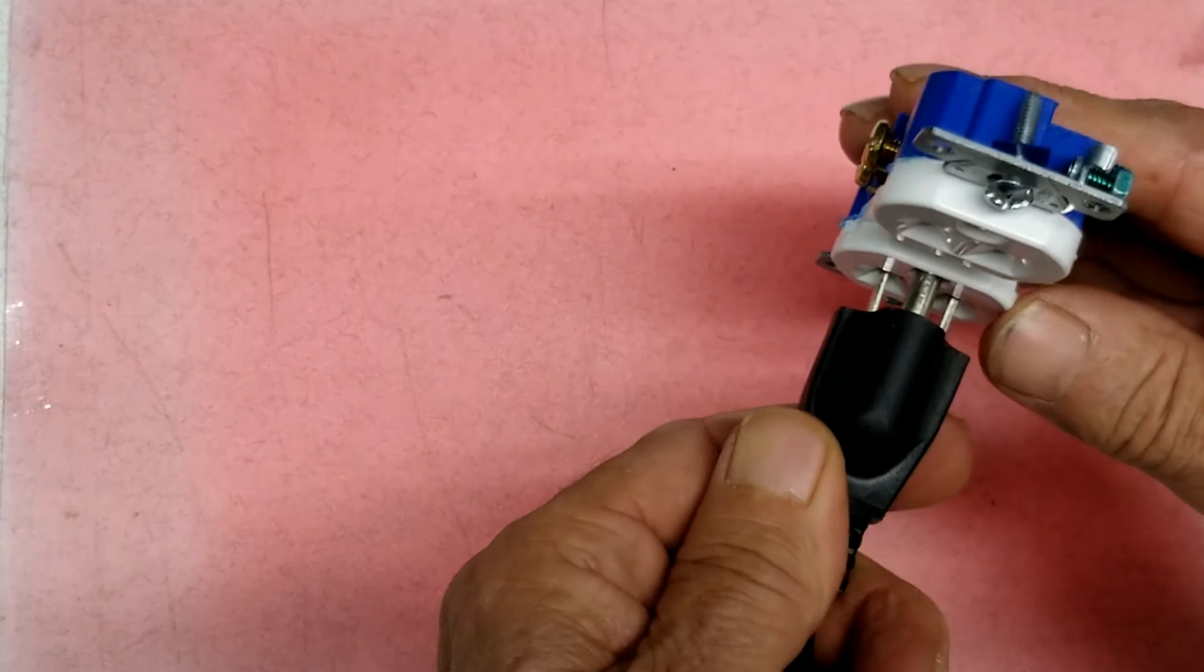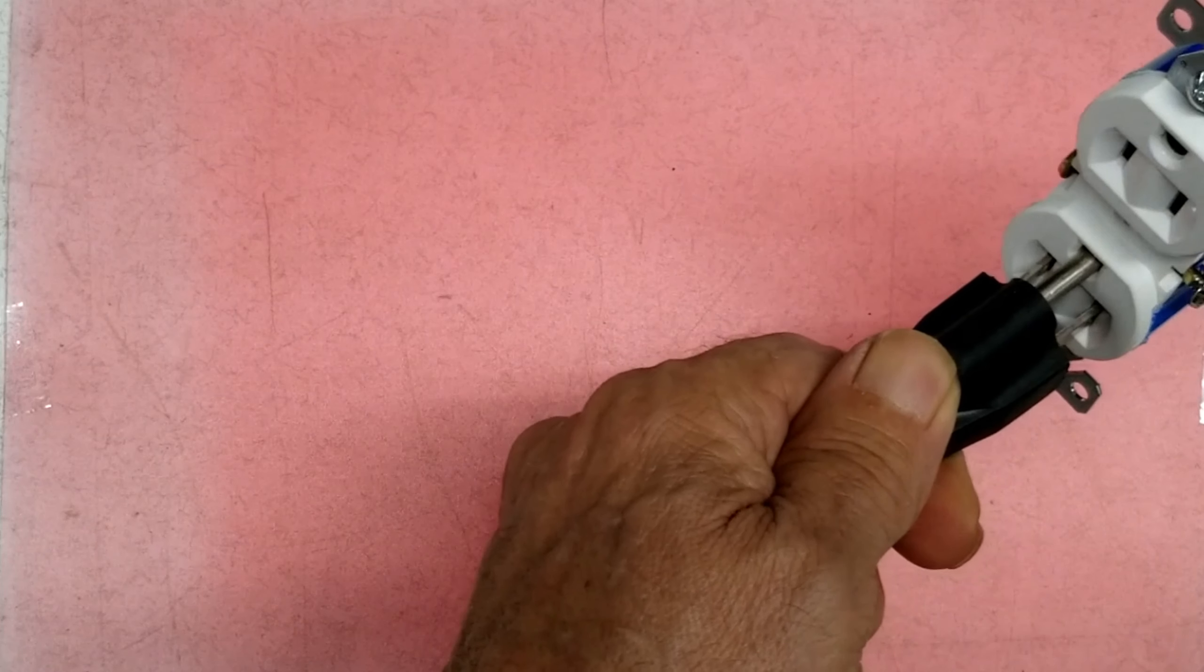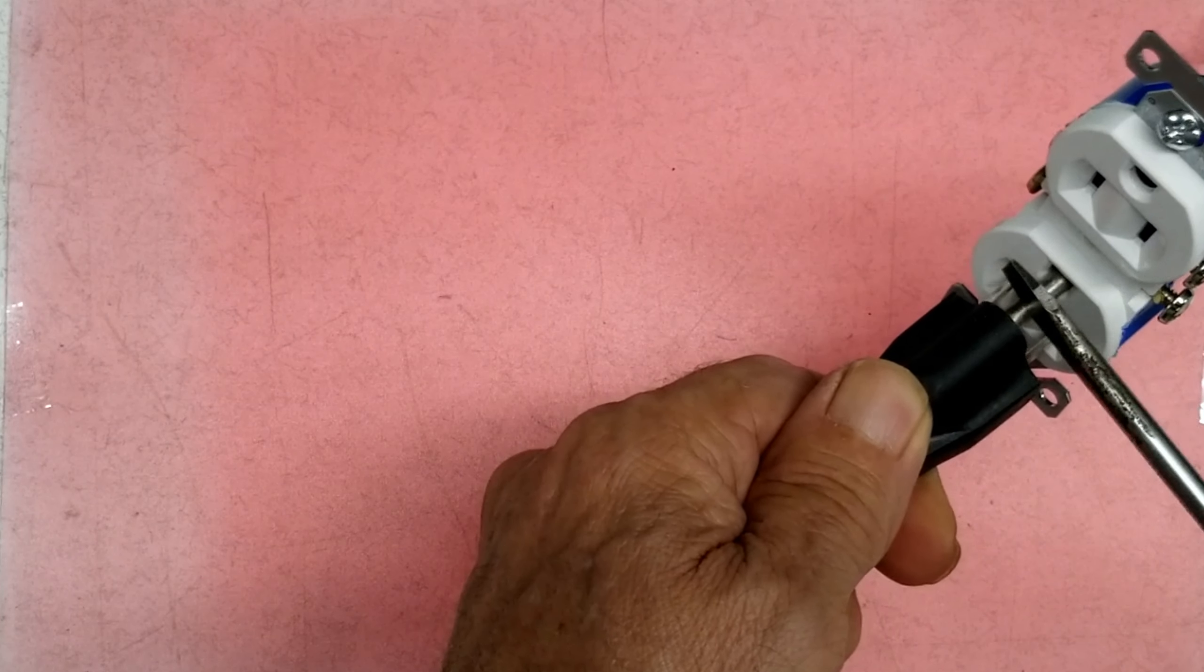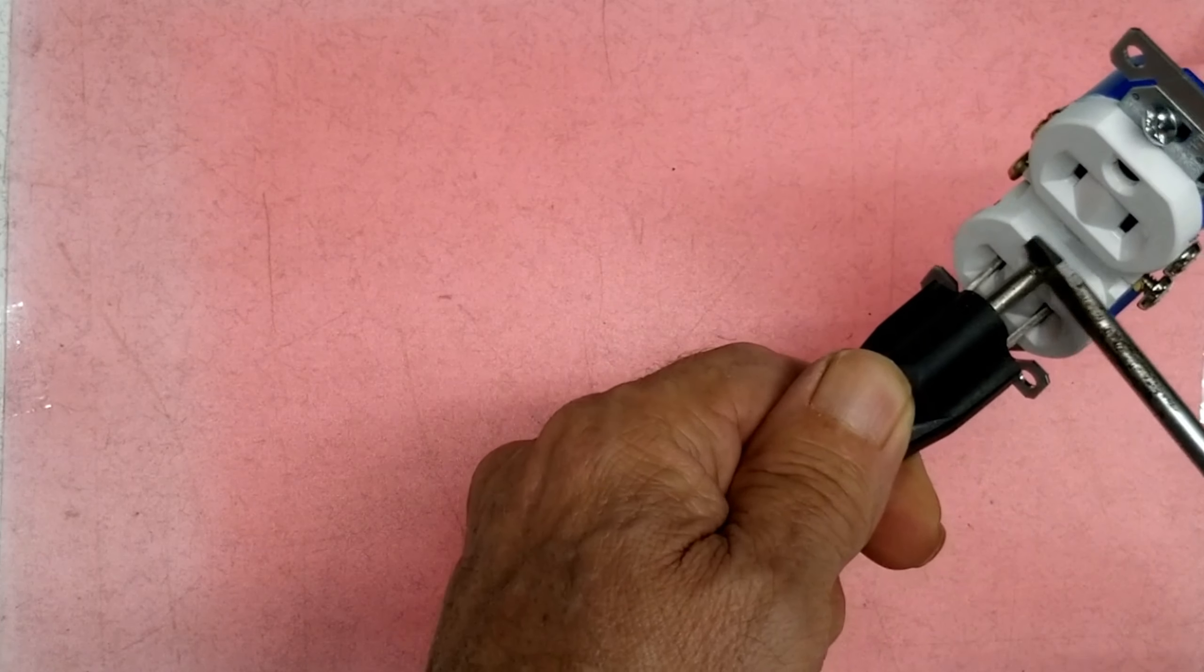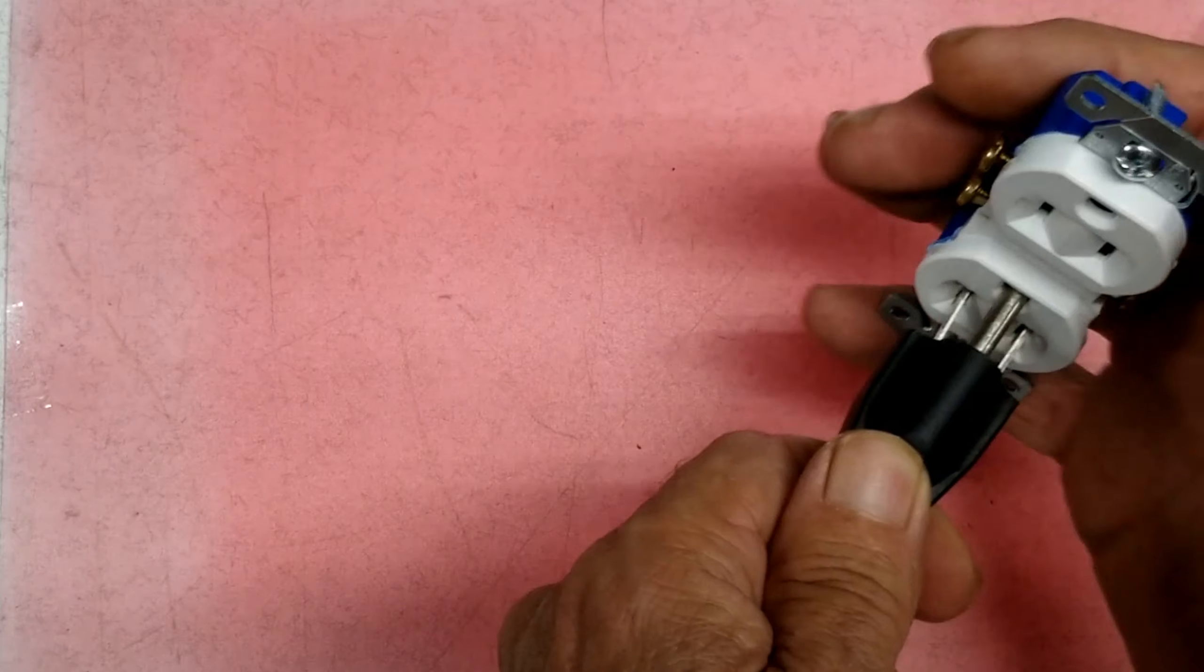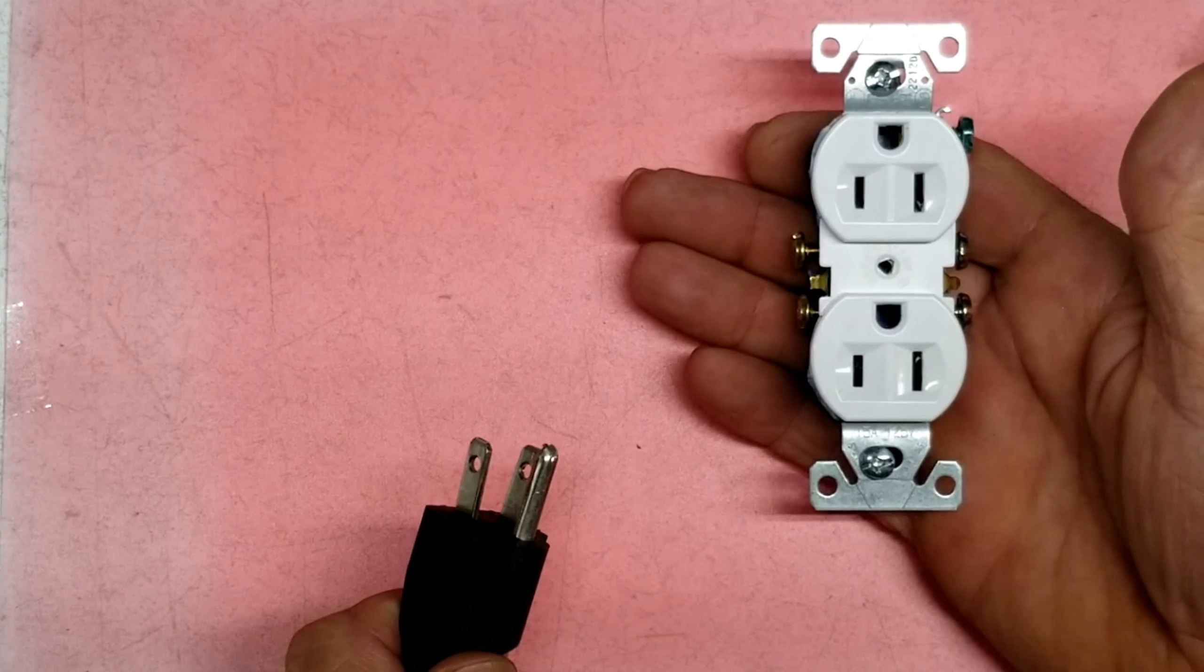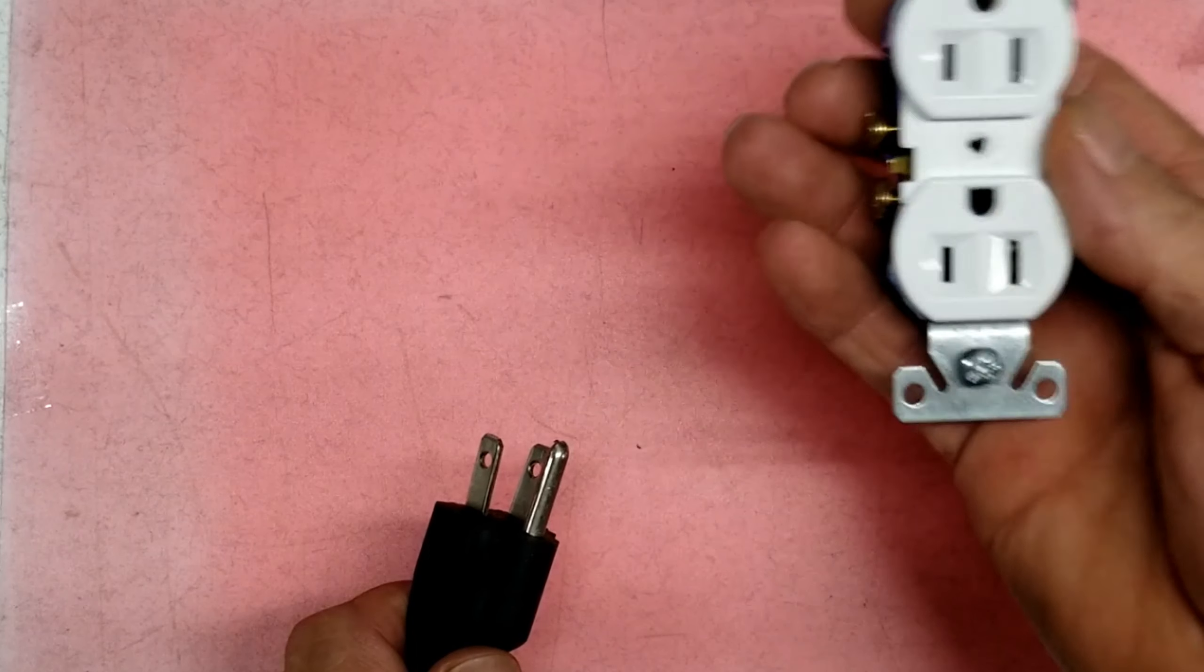But now, if it's upside down, the ground's on top, it's safer because you see what I'm talking about. When something falls, it's going to hit the ground plug. And that ground plug would protect you from going down here and shorting out. Now, most places, commercial, residential, industrial is doing it that way.